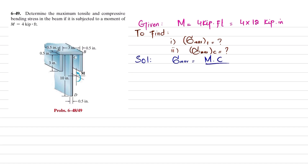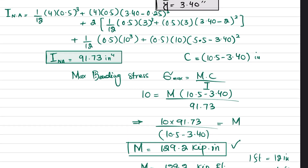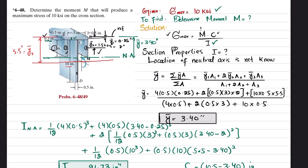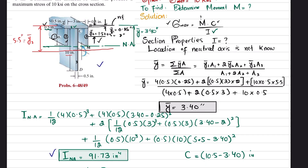Let's start with the solution. We know that maximum bending stress is equal to the maximum bending moment times c, divided by I. We will find I for the cross-section of the beam shown here. I have explained this thoroughly in problem 6-48, so we will use the values from there. The moment of inertia I was calculated as 91.37 in⁴, and the location of the neutral axis from the top is 3.40 inches.